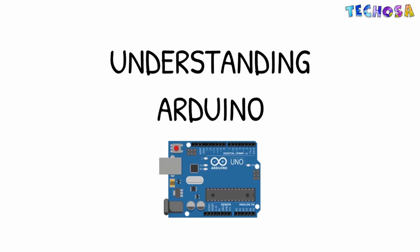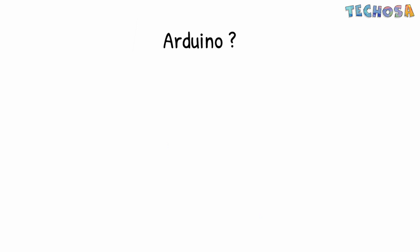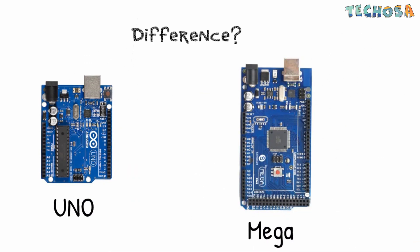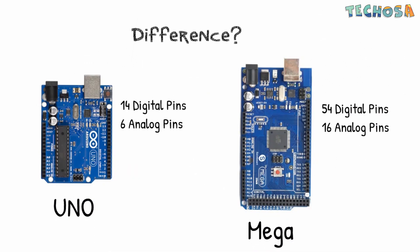Now we are going to study one of those embedded systems called Arduino. Arduino is a company that produces microcontroller boards. The most commonly used is the Arduino Uno. They also have more compact versions like the Arduino Mini, and bigger versions like the Arduino Mega. The Uno has 14 digital pins and 6 analog pins, while the Mega has 54 digital pins and 16 analog pins.